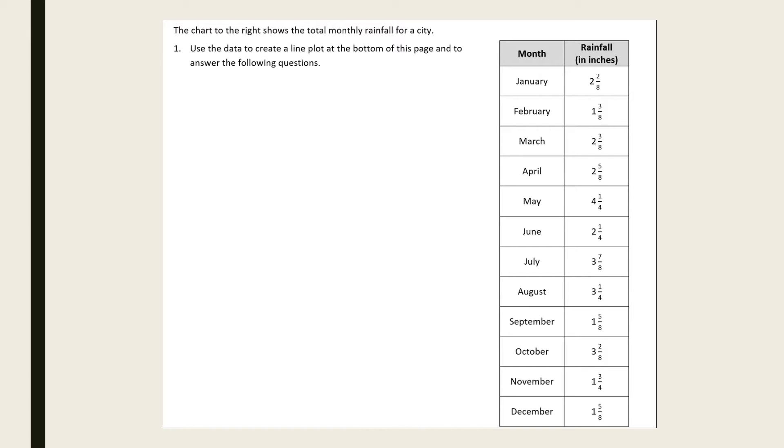First thing we have to look at is our fractions and see if we have all common denominators. And if we look, we have 2 and 2/8, 1 and 3/8, 2 and 3/8, 2 and 5/8, and then 4 and 1/4, and then we have a couple in fourths. So they are not common denominators, so we need to make them common.